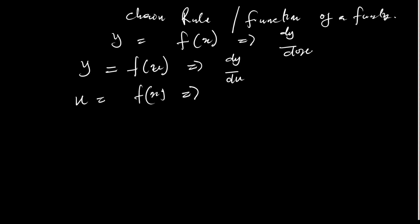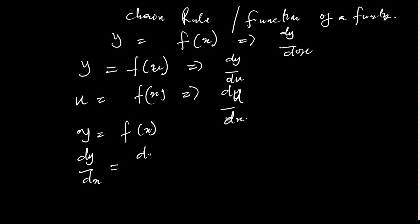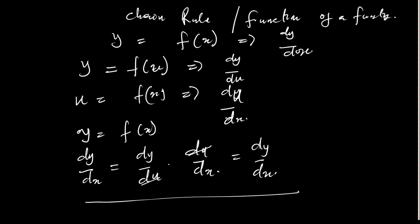Now if u also is a function of x, on differentiating I'll come up with du/dx. For y to come out as a function of x, we say that dy/dx equals dy/du times du/dx. In principle you see that the du cancels, and I should come up with dy/dx. This is the foundational principle of chain rule.